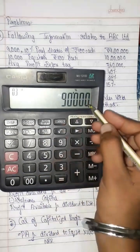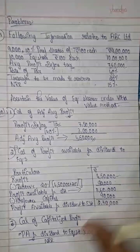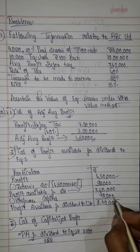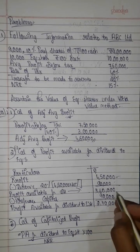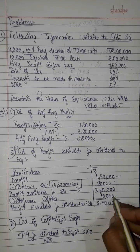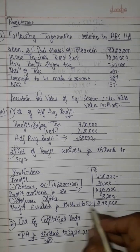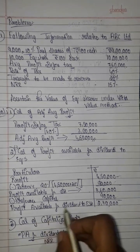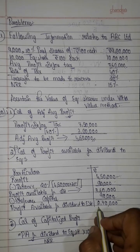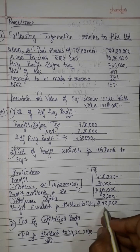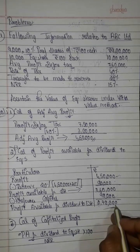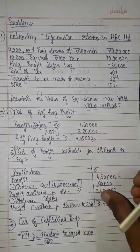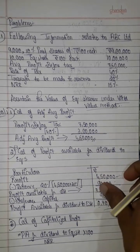Preference capital is 9 lakh, and the preference dividend is 9,00,000 × 10% = 90,000. So 3,60,000 minus 90,000 gives profit available for dividend to equity shareholders of 2,70,000. This completes steps 2 and 3.